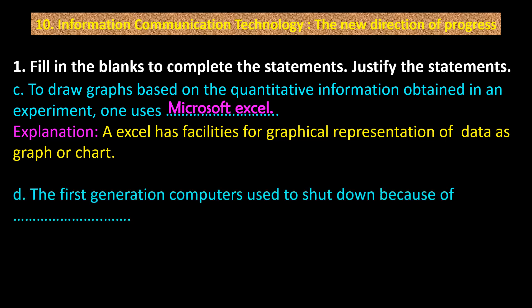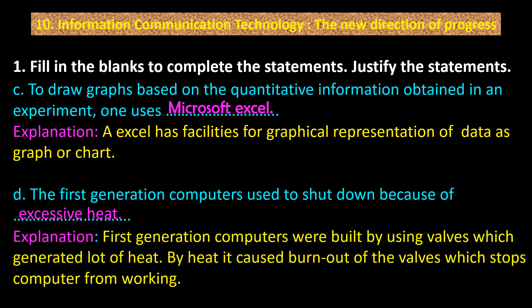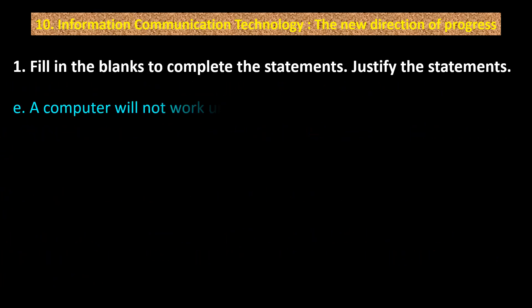Point D: The first generation computers used to shut down because of excessive heat. Explanation: First generation computers were built using valves which generated a lot of heat. The heat caused burn out of the valves which stopped the computer from working.